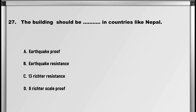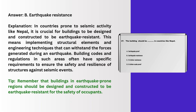Next up is question number 27: The building should be, in countries like Nepal: A. Earthquake groove, B. Earthquake resistance, C. 13 Richter resistance, D. 8 Richter scale groove. Answer: B. Earthquake resistance.